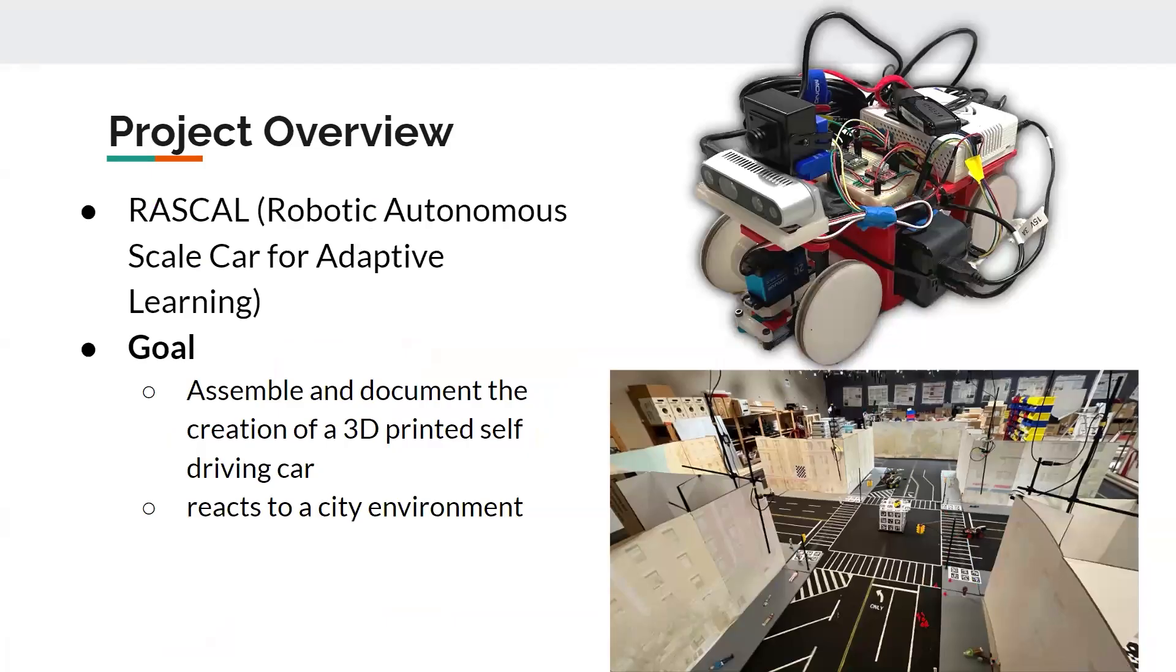So a quick overview for our project. We designed this car called Rascal, which stands for Reproduct Autonomous Scale Car for Adaptive Learning. And the goal for our project is to assemble and document the creation of the car and to train it to react to a city environment.